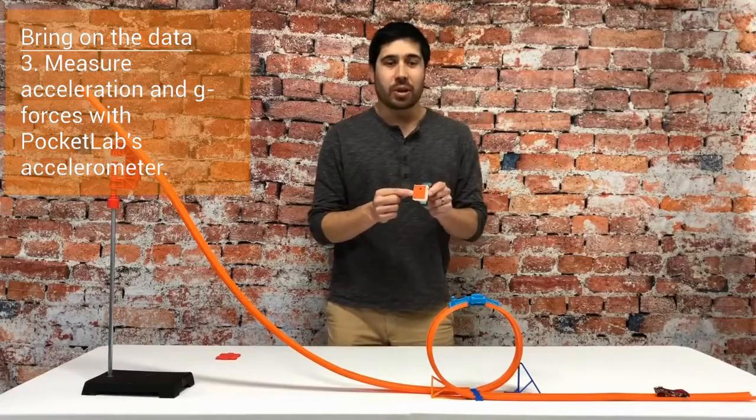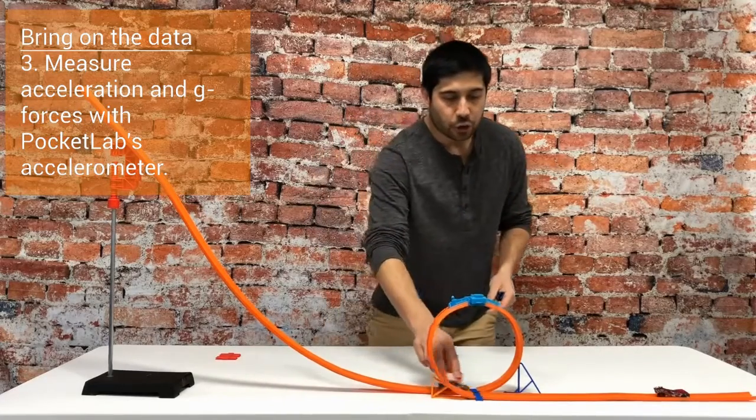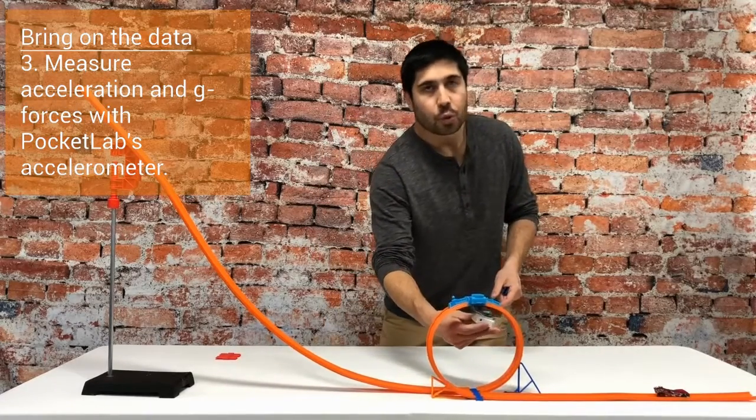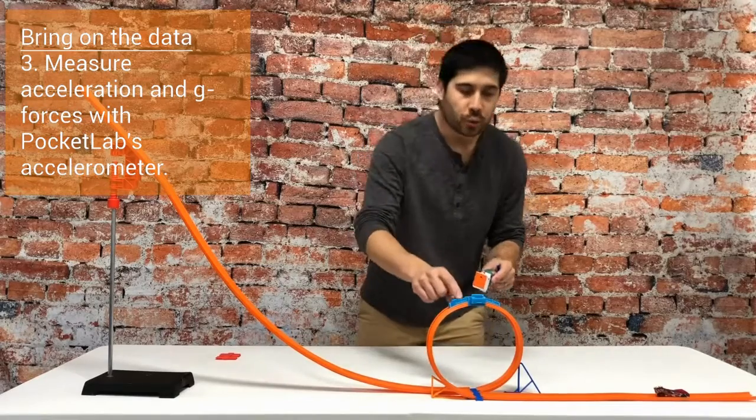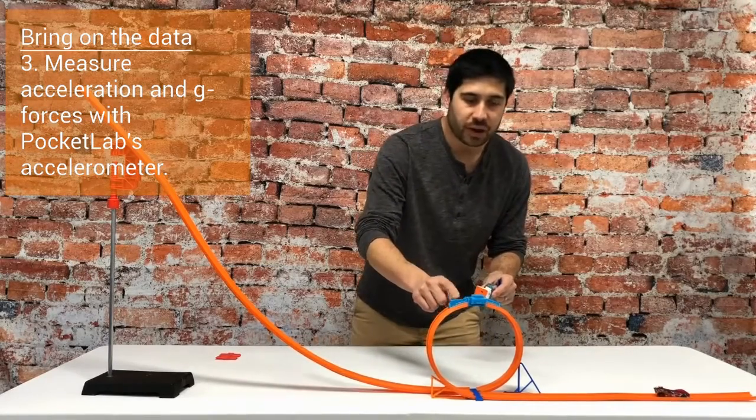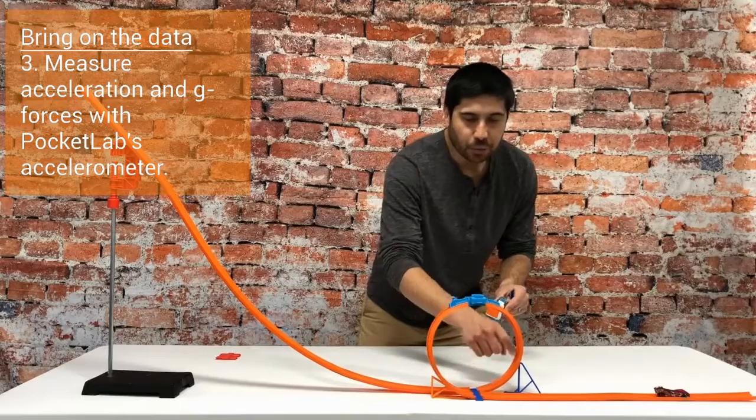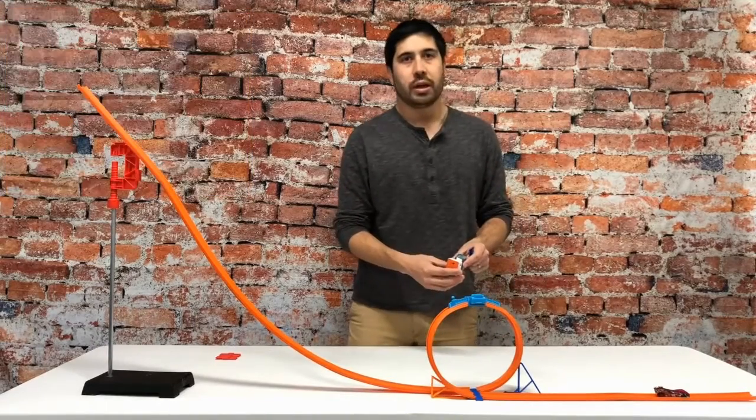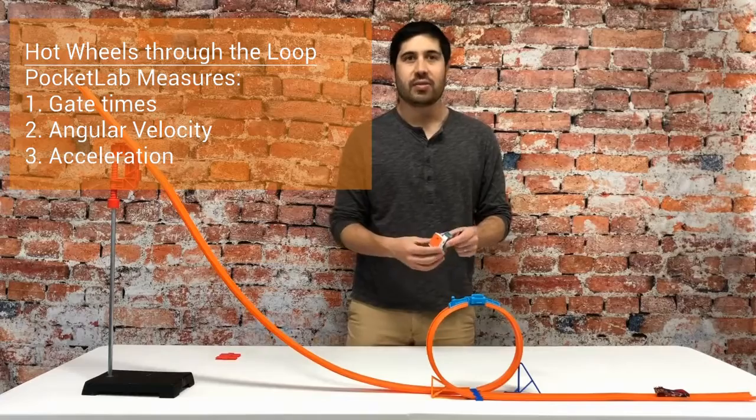PocketLab also has an accelerometer. So as the car goes through this loop, we can use the accelerometer to directly measure the G-forces that you would feel if you were a person going through this roller coaster loop. And we'll look at all of that data in this video.